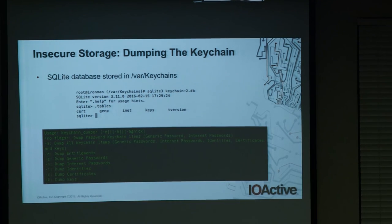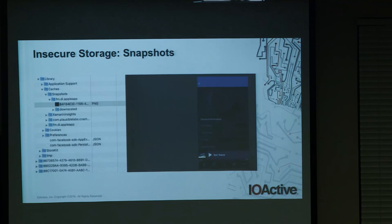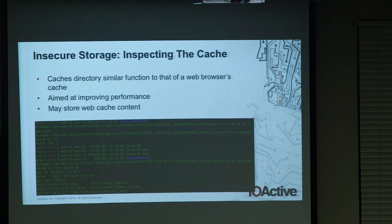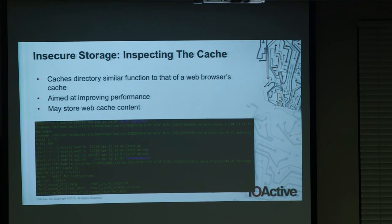The keychain is under the hood just a SQLite database, located at /var/Keychains. It can store sensitive information, and you'd usually dump its entire contents using Keychain Dumper. Additionally, when an iOS application goes into the background, it takes a snapshot stored at a well-known location — if that image contains sensitive information, you have information disclosure. The cache, similar to a web browser's cache, is aimed at improving performance but may store sensitive information. You can interact with it using standard SQLite tools obtained from the command-line utilities mentioned earlier.